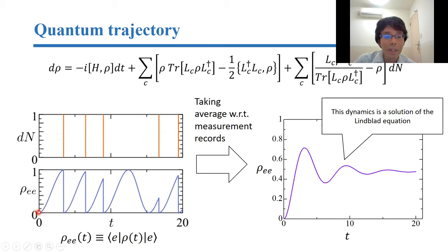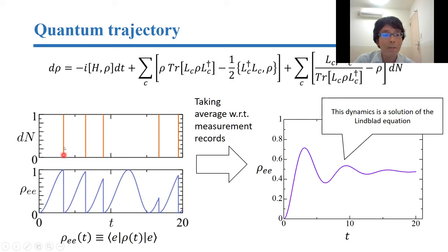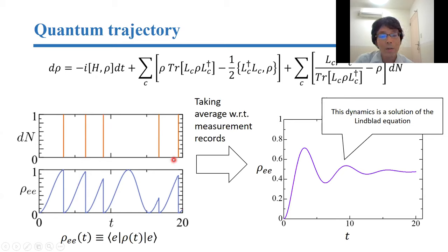This is an example of quantum trajectories. dN corresponds to the measurement records. The red line represents that at this point we measured some event — for instance, a photon. When we measured the photon, due to the back action, the density matrix goes to the ground state. Given these measurement records, we can obtain this kind of stochastic quantum trajectory. If we average over all possible measurements, we reproduce the average density matrix dynamics described by the original Lindblad equation.